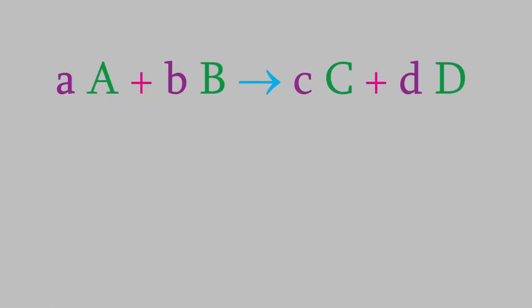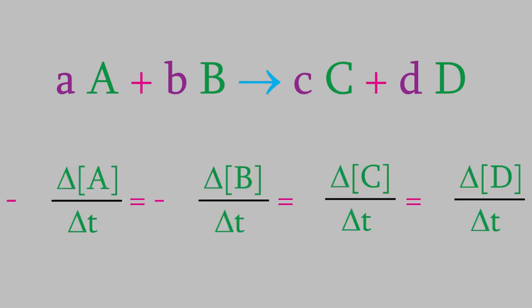Suppose we had this generic reaction. We have some reactants called A and B, and some products called C and D, and the balanced reaction has coefficients lowercase a, b, c, and d. Just like before, the rate of the reaction will be the change in concentration over the change in time, with negative signs in front for the reactants. But this time, we'll divide each one by the coefficient from the balanced reaction. If we do that, we'll get the same number no matter which compound we use to measure the rate. So now we have a much better way to calculate the rate of a reaction.